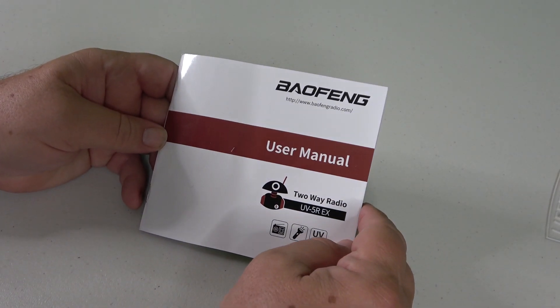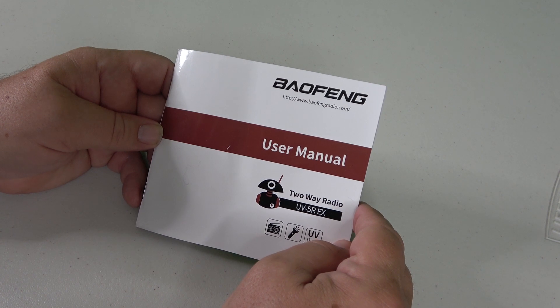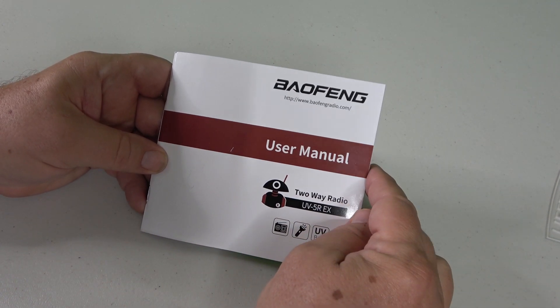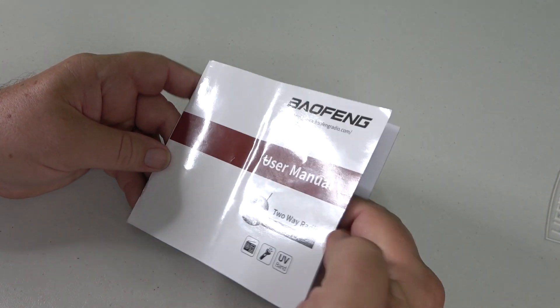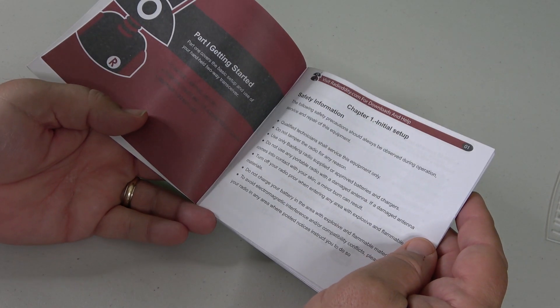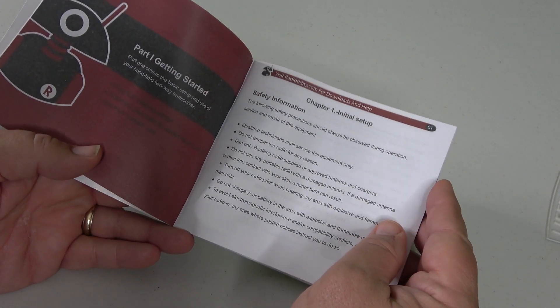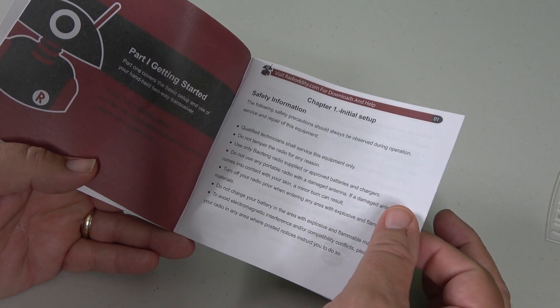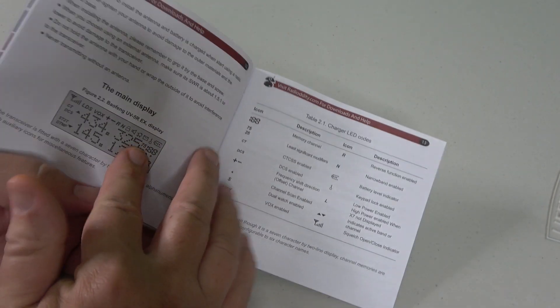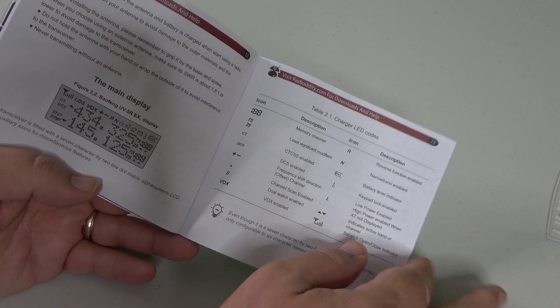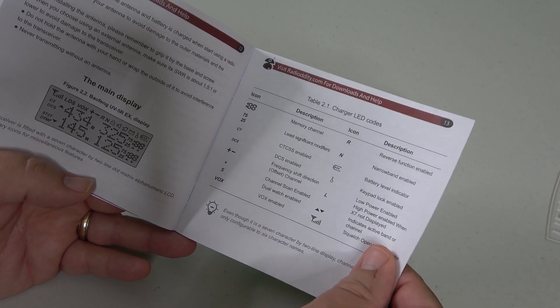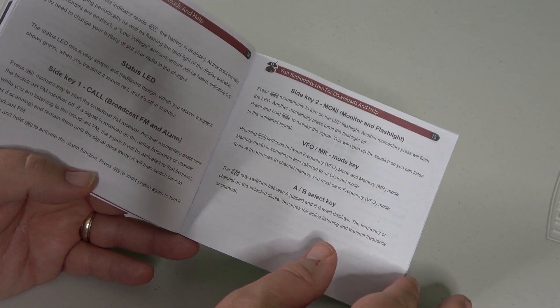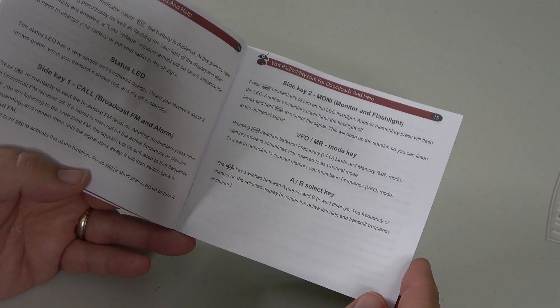One of the things I thought was interesting about this is that this is dual marketed with Radiotity. You see the little Radiotity guy there, and Baofeng. And one of the things I noticed is that the manual is a much better manual than I've come to expect with some of these little Baofeng radios. The English is good. They use a lot of white space, so it's easy to read. And then the icons are fully explained, as well as some of the basic functions. And so this is a pretty nice manual to get you started.